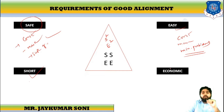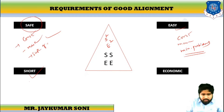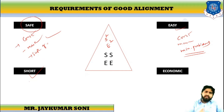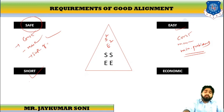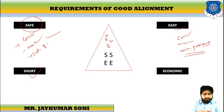Economic means it should have minimum construction cost and minimum maintenance cost. As engineers, we are hired for reduction of cost. If an engineer does not provide suggestions that reduce cost, there is no use of hiring an engineer. So a good alignment must be Safe, Short, Easy, and Economic — S-squared E-squared.